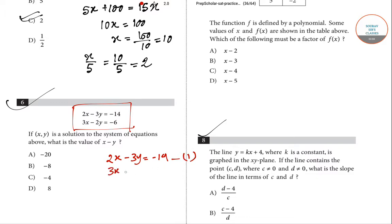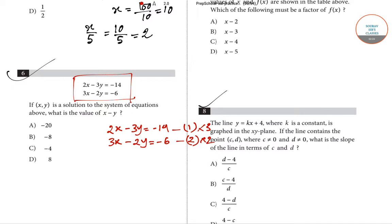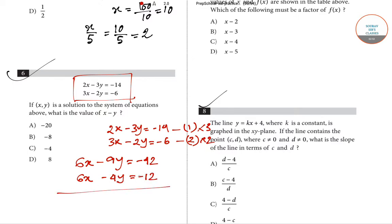Equation two is three x minus two y equals minus six. We multiply equation one by three to get six x minus nine y equals minus forty-two, and equation two by two to get six x minus four y equals minus twelve. We then subtract the second equation from the first.